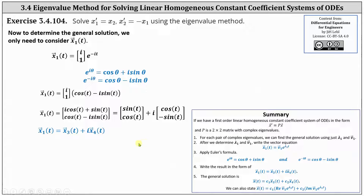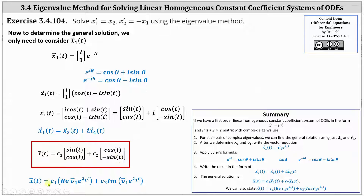Now we have x one of t in the form x three of t plus i times x four of t, and we can write the general solution: x of t equals c one times x three of t plus c two times x four of t, where x three of t is the real part and x four of t is the imaginary part of V one times e to the power of lambda sub one times t. I hope you found this helpful.